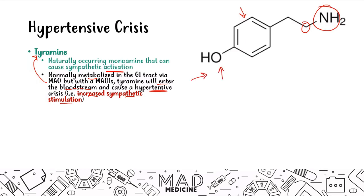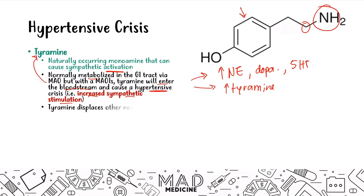You are already increasing sympathetic stimulation by raising levels of norepinephrine, dopamine, and serotonin with the MAOI. Adding unmetabolized tyramine increases it even further, and in the end that leads to an increased blood pressure. Importantly, tyramine displaces all other monoamines — tyramine is far more potent than the other monoamines.